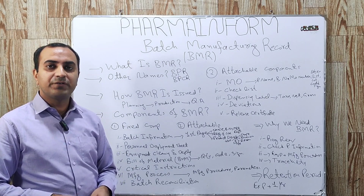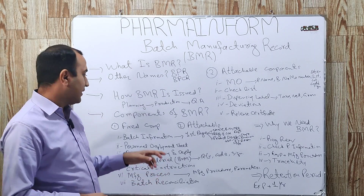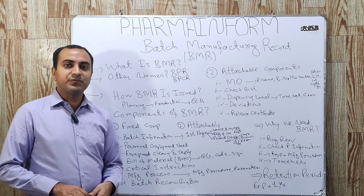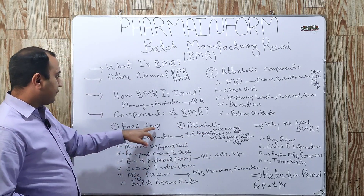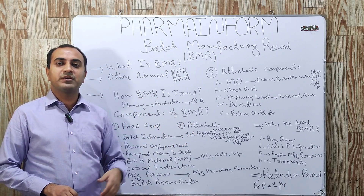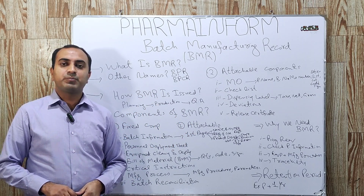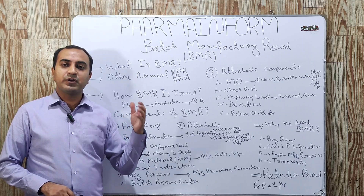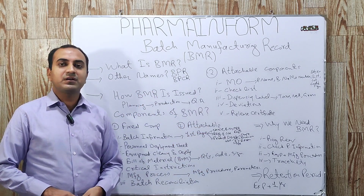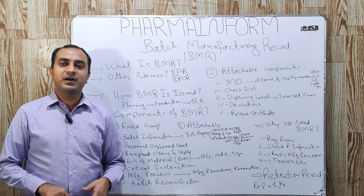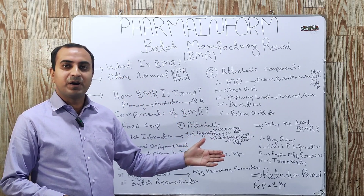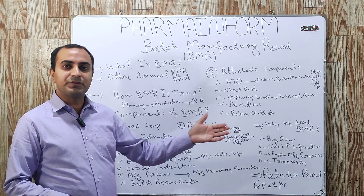What are the components of BMR? There are two components of BMR: one is the fixed components and the other is the attachable components. Fixed components are those components of BMR which are printed according to the master file. Attachable components are those components which we add to the BMR after receiving from other departments.